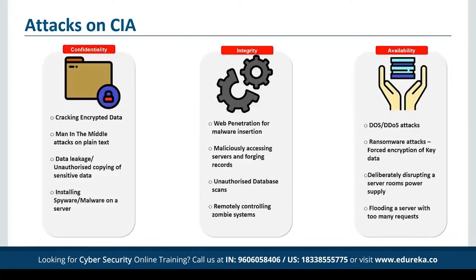First on the list, we have confidentiality. Confidentiality is roughly equivalent to privacy — measures undertaken to ensure it are designed to prevent sensitive information from reaching the wrong people while making sure the right people can access it. Access must be restricted to those authorized to view the data. Data is often categorized according to the damage that could result from it falling into unintended hands. Safeguarding data confidentiality may involve special training covering security risks, strong password best practices, and social engineering methods to prevent unintentional data breaches.